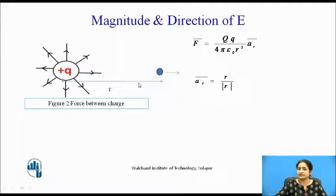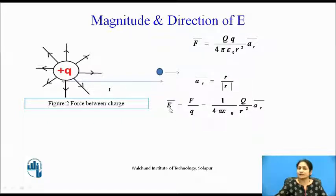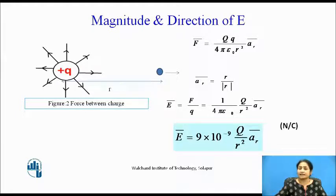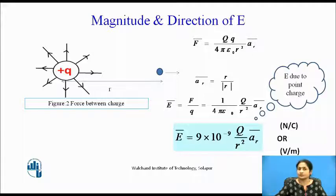The vector R is the distance vector between the two charges. Substituting the value of the force, the equation for E-bar equals 1 upon 4 pi epsilon, Q upon R square, times A_R-bar, where A_R-bar is the unit direction in the R direction. Substituting the value of epsilon-zero as 8.85 × 10⁻¹² gives E-bar equal to 9 × 10⁹ multiplied by Q upon R square times A_R-bar. The unit for this is force per unit charge — that is, Newtons per coulomb or volts per meter. This is the electric field due to the point charge.